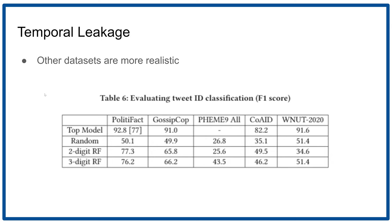Unfortunately, other datasets are more realistic. For example, a random guess would give you about 50% performance. And we still get better than random by knowing the date — about 70–75%. But it's significantly worse than the state-of-the-art result, which is above 92.